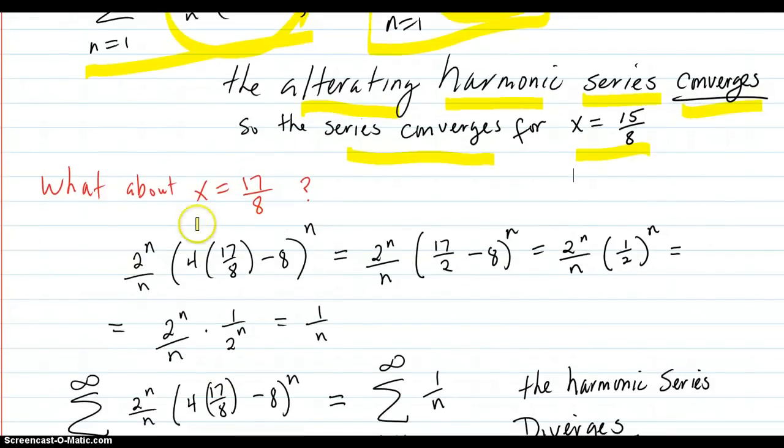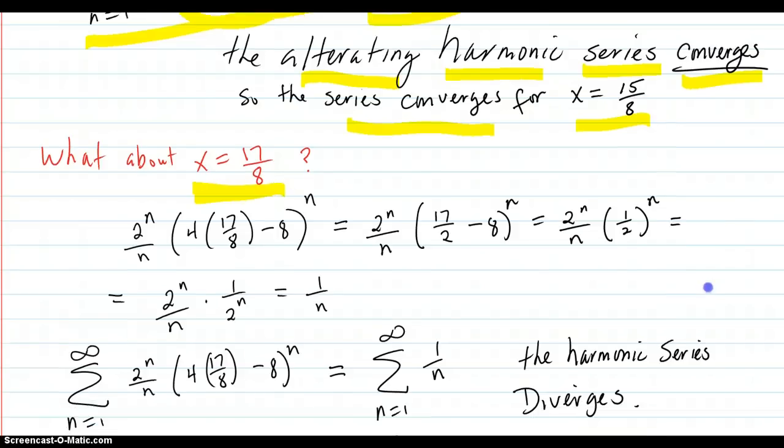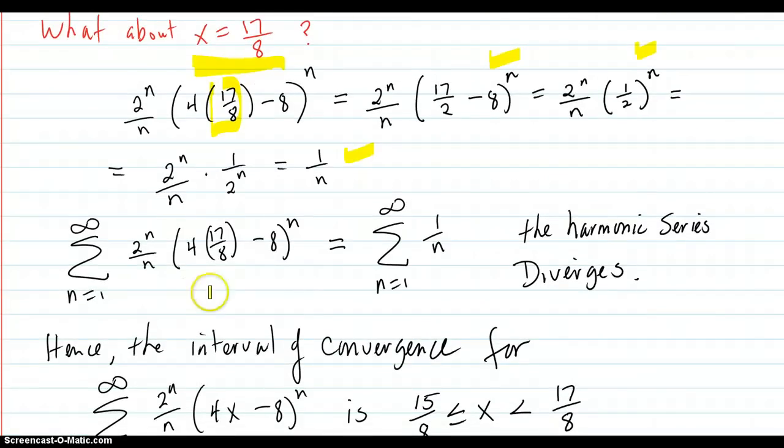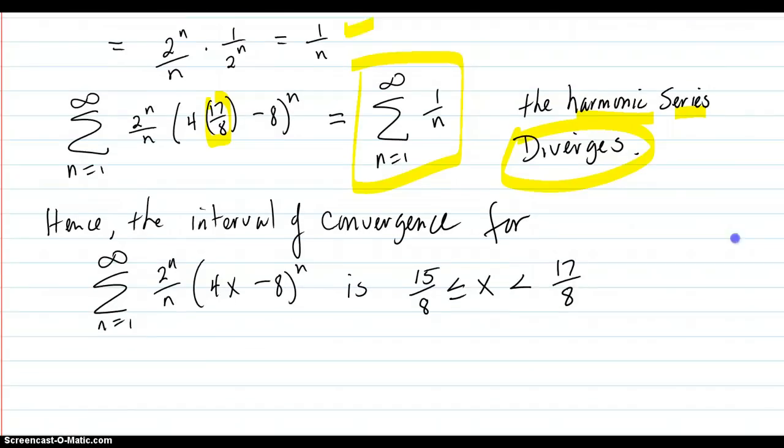What about x equals 17/8? Then put in 17/8. Work it all out. Comes out to 1 over n. And so the series with the 17/8 in there equals this series here. That's the regular harmonic series. It diverges.